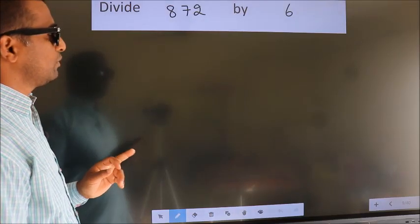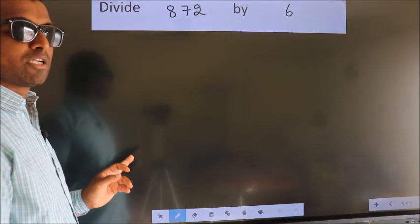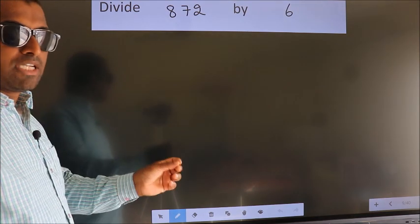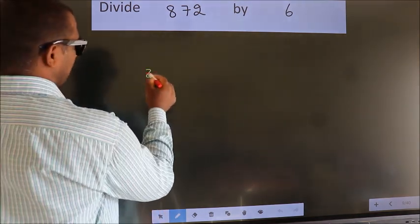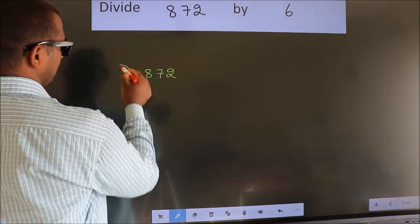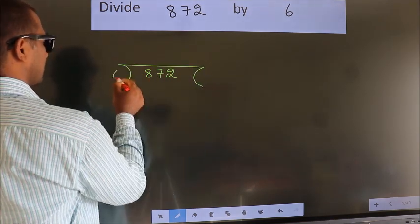Divide 872 by 6. To do this division, we should frame it in this way. 872 here, 6 here.